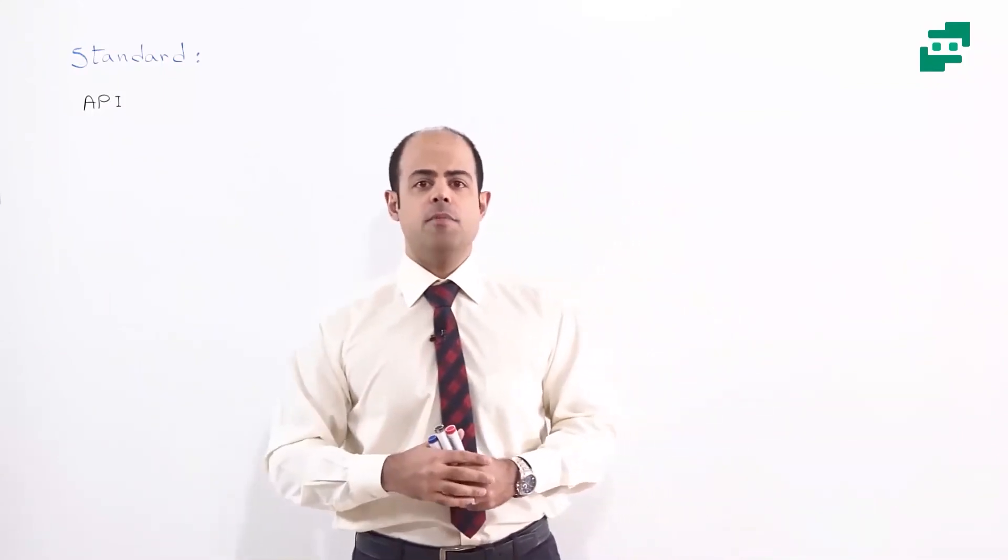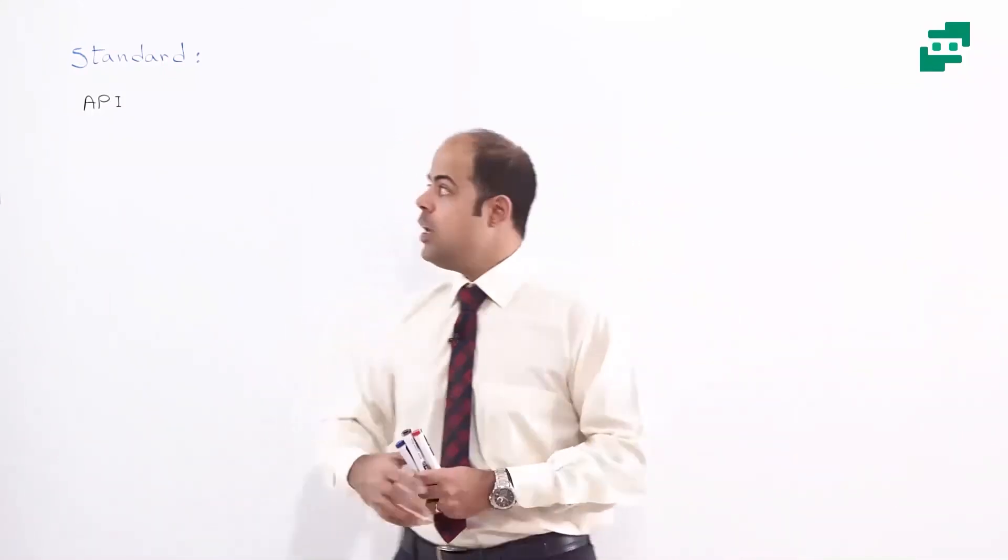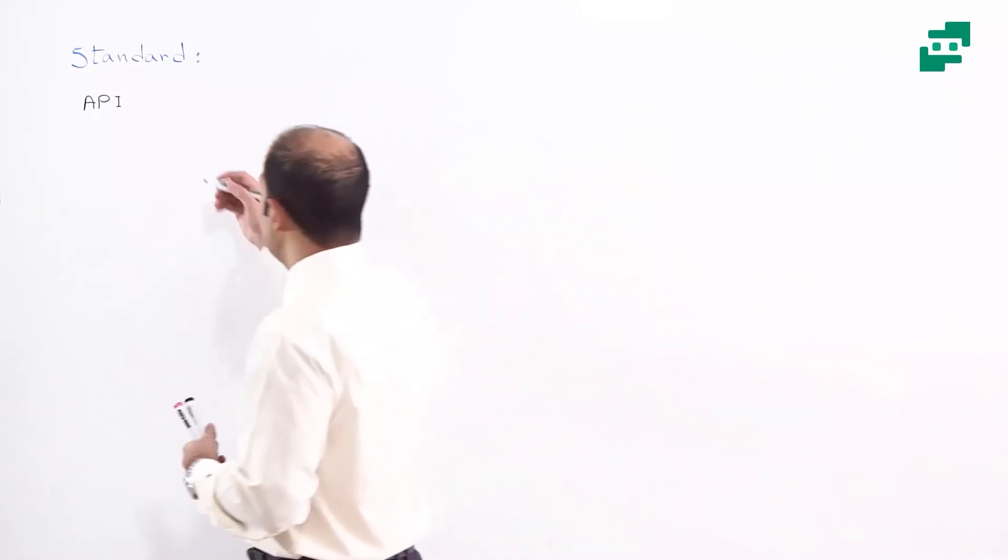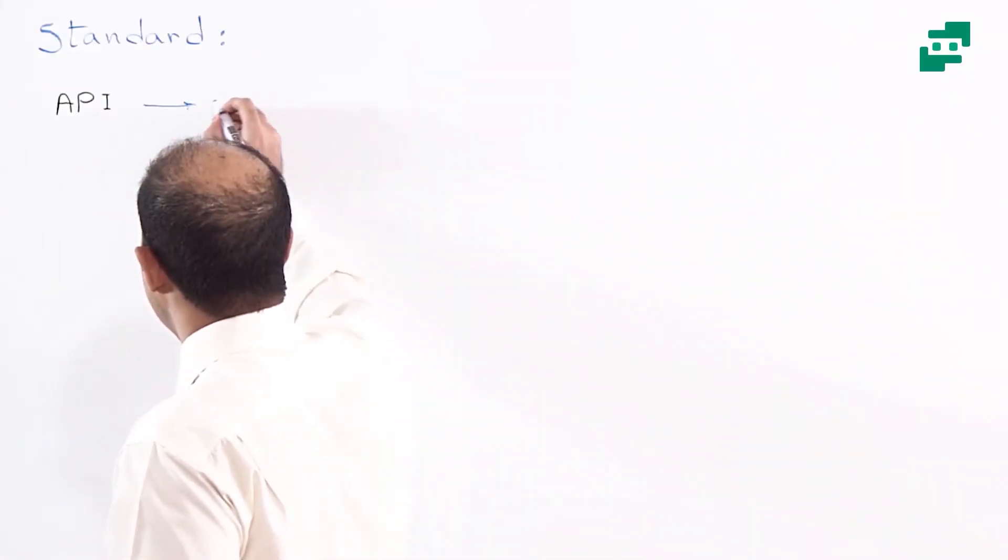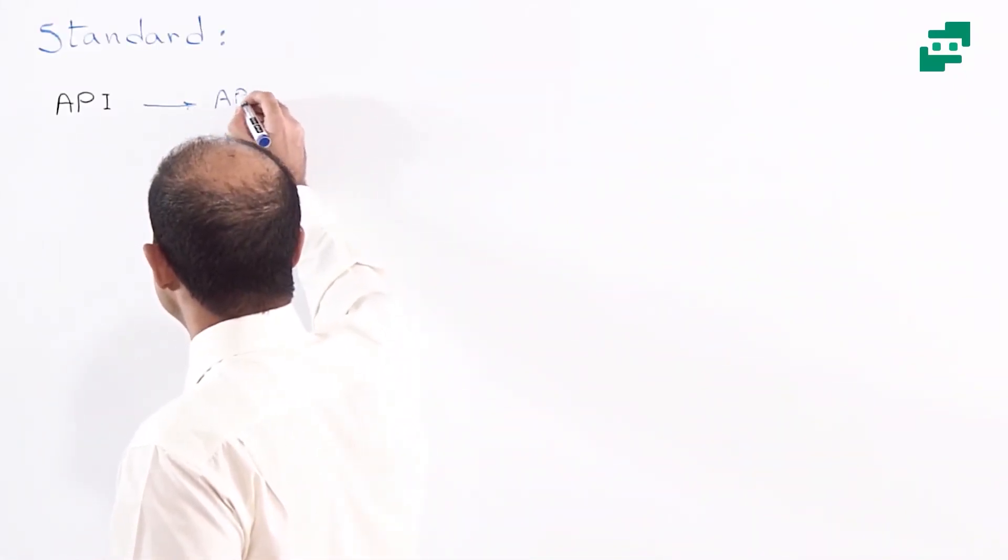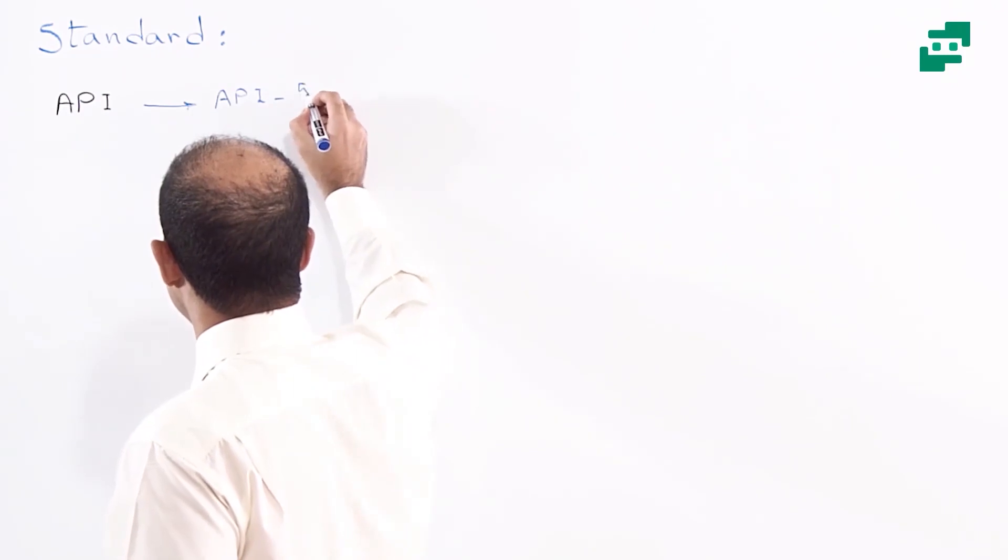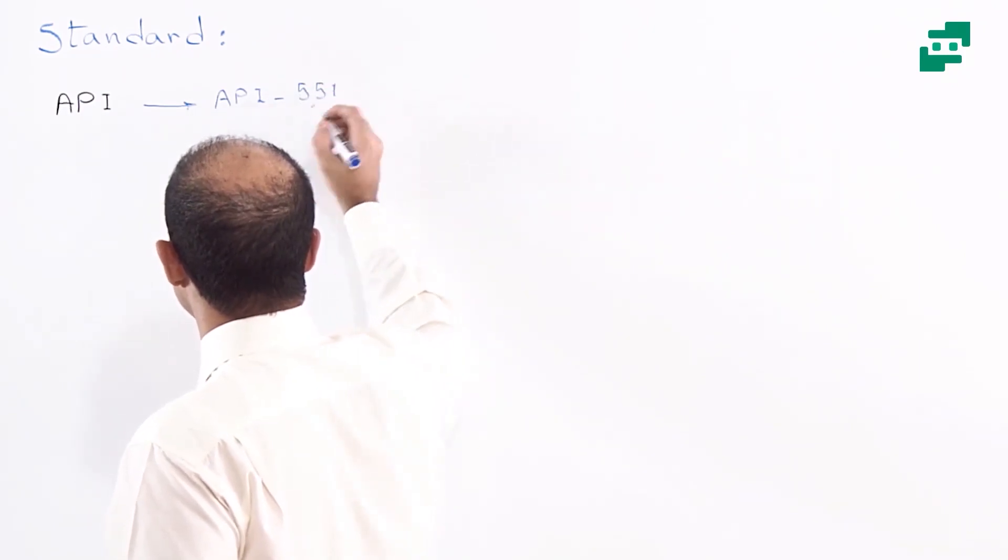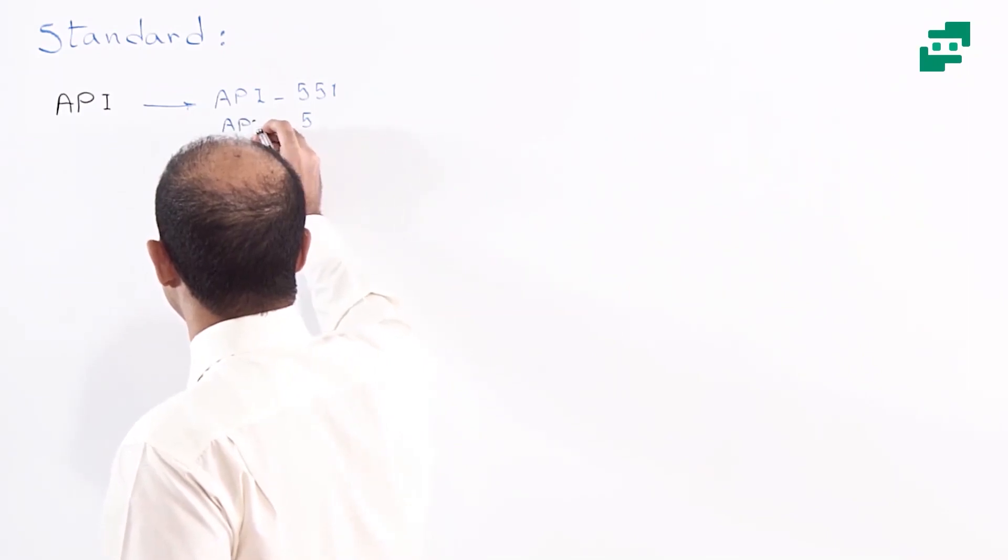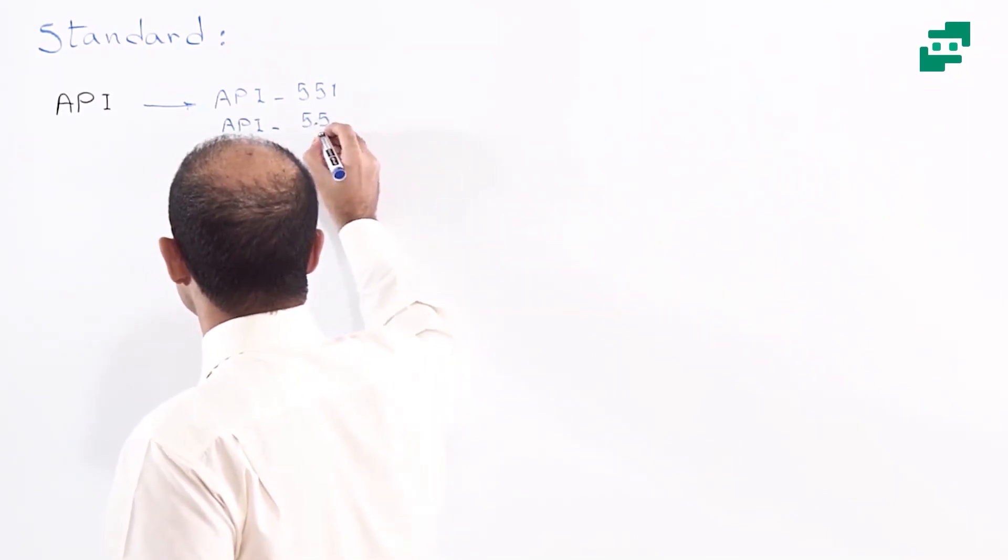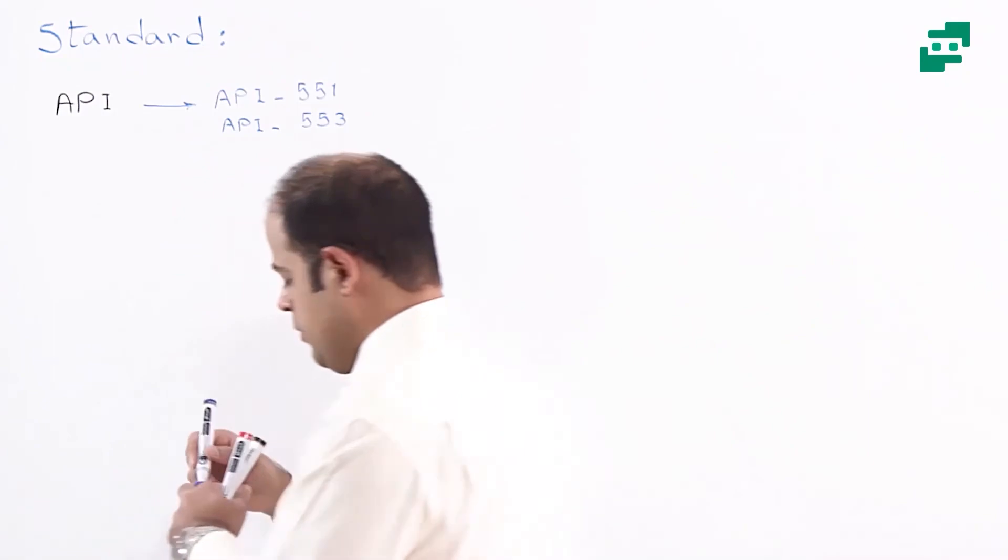For example, I want to make an example to clarify this issue for you. Just imagine I'm writing API 551, or for example, API 553.